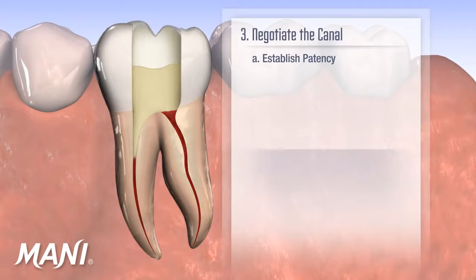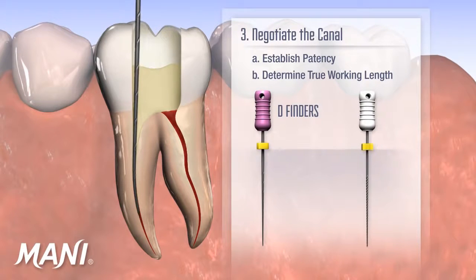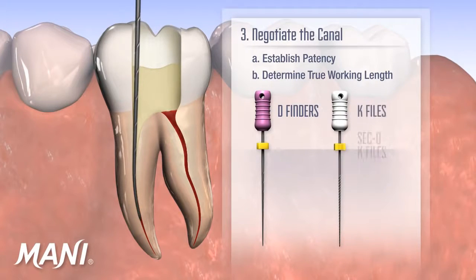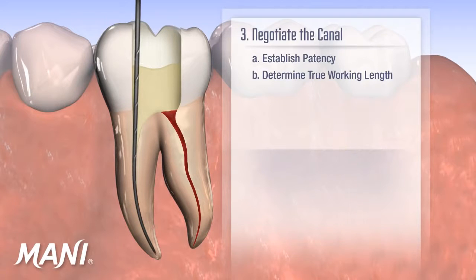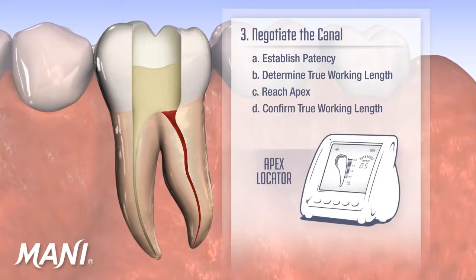Next, the clinician should negotiate the canal and establish both patency and determine the true working length. Mani D-Finders are stiff hand files that are excellent for this purpose. Alternatively, Mani K-files and Mani Seco K-files, which are safe-ended, are well suited for this purpose. Once the clinician reaches the apex, it is recommended that the true working length be confirmed with an apex locator and/or a radiograph.